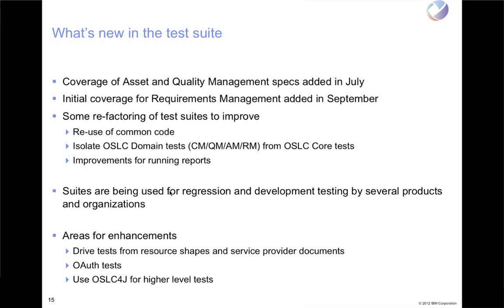We also want to add some OAuth tests — we have some that are in the process of being readied for contribution, so we hope to have those out there. We'd also like to have the tests use OSLC4J where it makes sense. They predate OSLC4J, but for higher-level tests where we're making sure that particular attributes are being put on a resource, OSLC4J would be very useful in the test suites — not necessarily for the low-level tests where we're checking HTTP status codes.